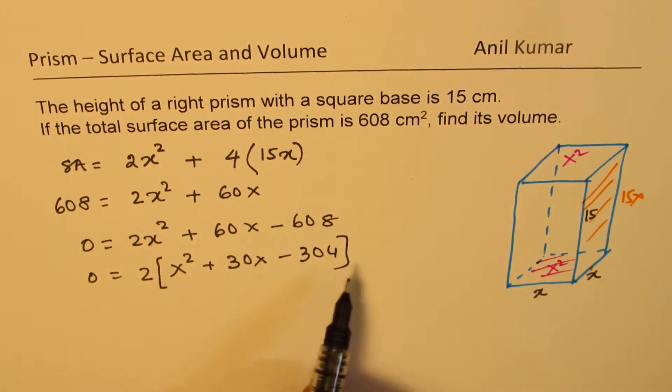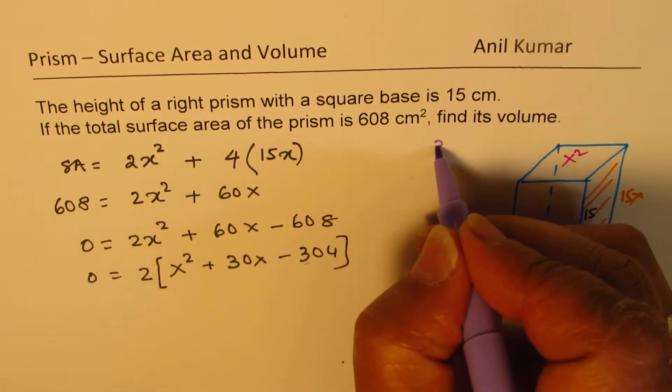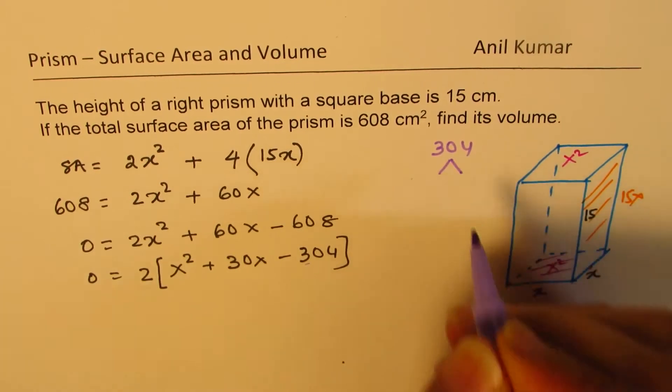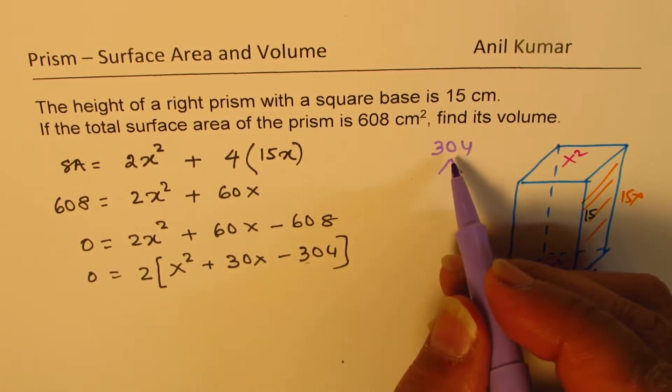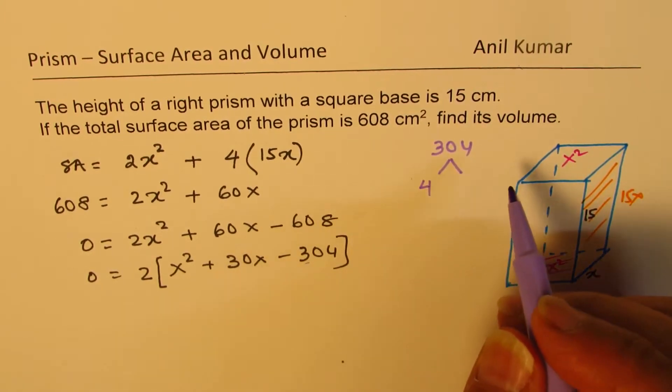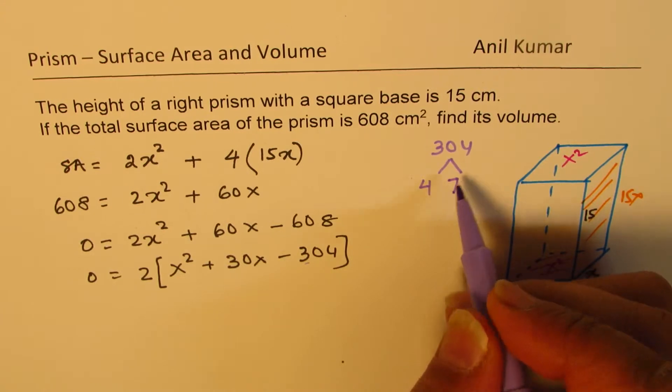Now, we need to find a number which could give us 0, and that will be the solution. So one of the best ways of finding these numbers is to find factors of 304. So 304, you could actually factor this. If I divide this by 4, then we get 4 times 7 is 28, and 4 times 6 is 24.